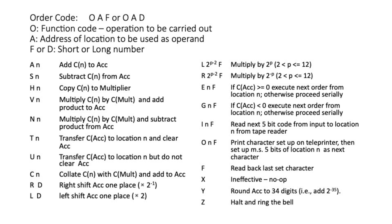The T order is how you store things back in memory — it transfers the contents of the accumulator to the location in store and then clears the accumulator. Sometimes you might want to store an intermediate result but carry on working with it, and for that you had the U order, which just did the transfer without the clear. Collate is logical AND — it collated the contents of the store location with the multiplier and added it to the accumulator.